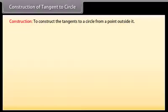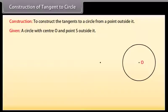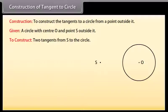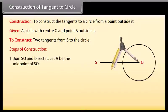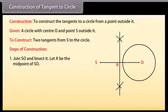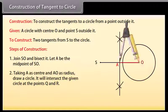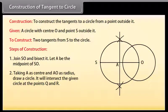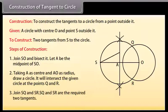Construction: to construct the tangents to a circle from a point outside it. We are given a circle with center O and a point S outside it. We have to construct the two tangents from S to the circle. Steps of construction: join SO and bisect it. Let A be the midpoint of SO. Taking A as center and AO as radius, draw a circle. It will intersect the given circle at the points Q and R. Join SQ and SR. SQ and SR are the required two tangents.